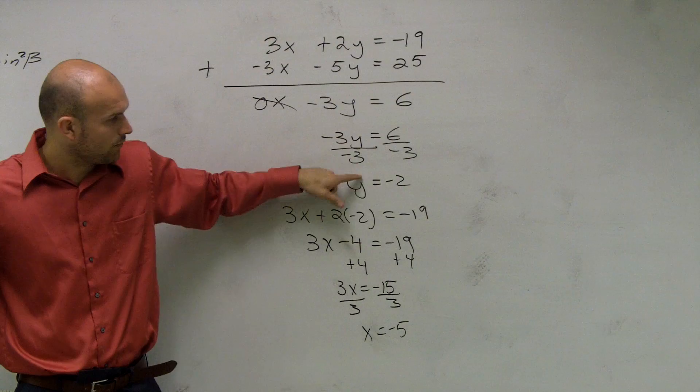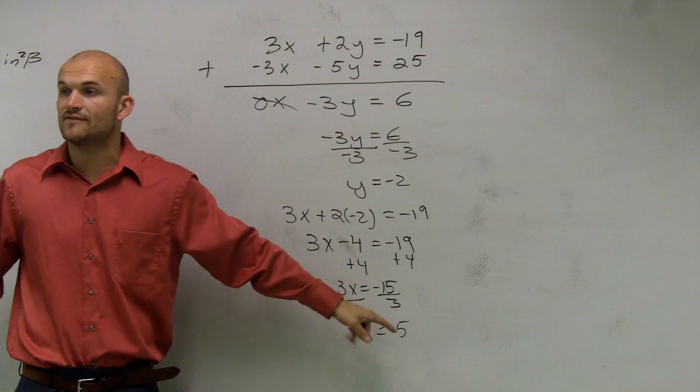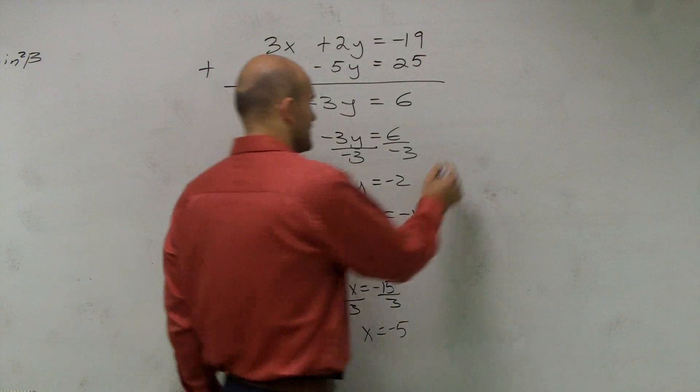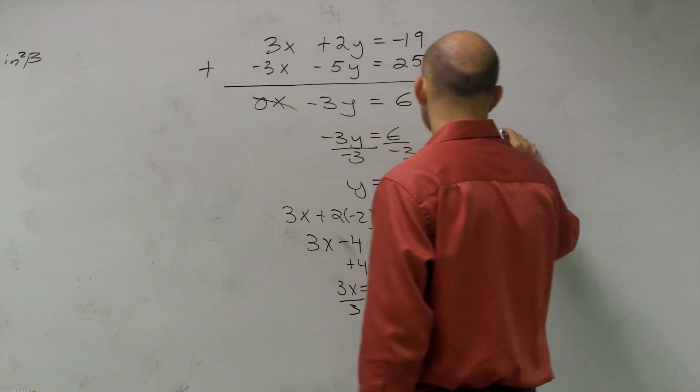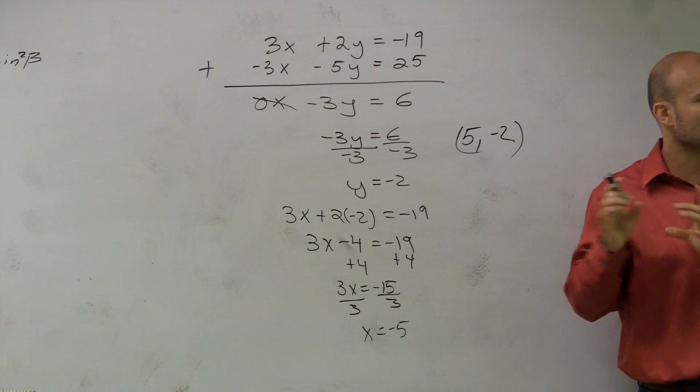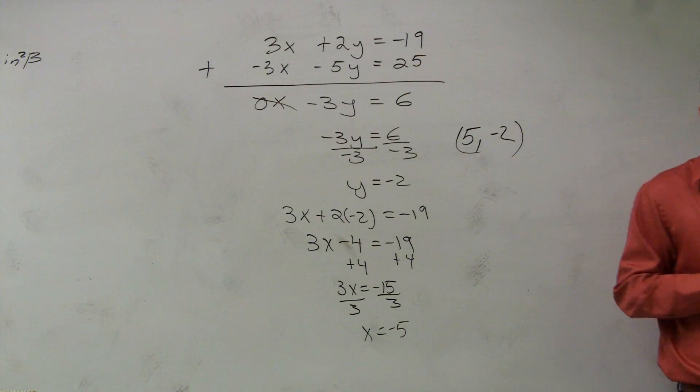Therefore, I know that y equals negative 2, x equals negative 5, is going to be the solution of your two equations. So therefore, my final answer is going to be negative 5 comma negative 2, if I wanted to write it as a coordinate point. Right? Remember a coordinate point where we're dealing with the graphing, and that's where the two lines intersect?